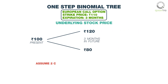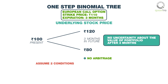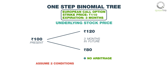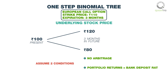We assume two conditions. The first is that arbitrage opportunities do not exist. We will set up a portfolio in such a way that there is no uncertainty about the value of the portfolio at the end of three months. The next condition is that because the portfolio has zero risk, the return it earns must be equal to the risk-free interest rate. This means this portfolio will give us the same returns as a risk-free bank deposit.